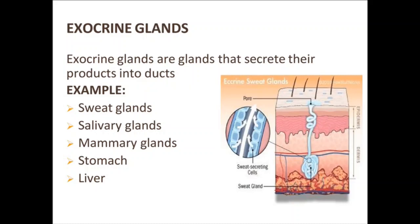Exocrine glands are glands that secrete their products into ducts. Examples of exocrine glands are sweat glands, salivary glands, mammary glands, stomach, and liver. In this diagram, we can clearly see that a sweat gland is shown.